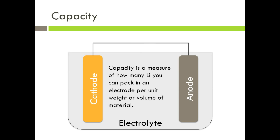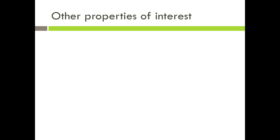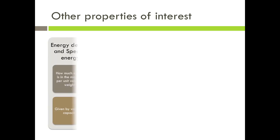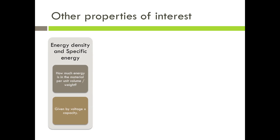The capacity is another important property of an electrode. The capacity is a measure of how many lithium you can pack in an electrode per unit weight or volume of material. Other than the voltage and capacity, there are many other properties of interest to battery researchers. For example, energy density and specific energy are very important properties. They measure how much energy is in the material per unit volume or per unit weight, and are given by the voltage multiplied by the capacity of an electrode.